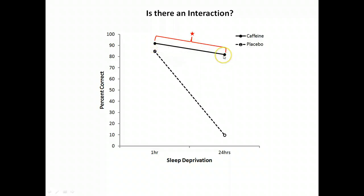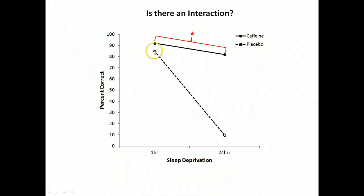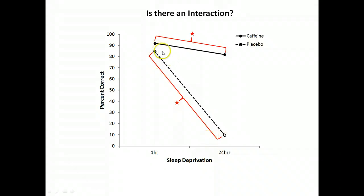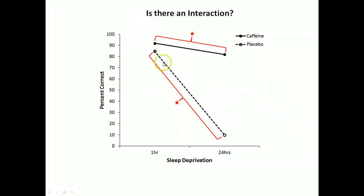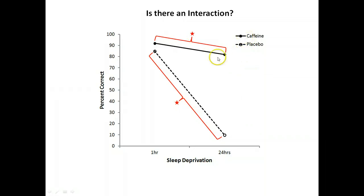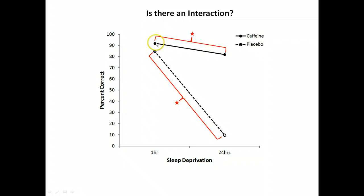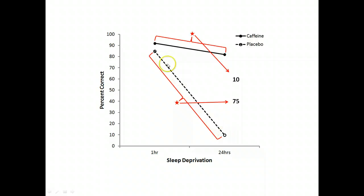The difference for the caffeine group between performance at one hour and 24 hours is about 10%. What we want to examine is whether this difference is different from the difference in the other level of supplement. Overall, performance is worse at 24 hours than at one hour — which makes sense, since 24 hours of sleep deprivation will impair attention and memory. But we're examining whether caffeine alleviates this difference. The difference for the placebo group is about 75%, so the interaction is asking whether this difference of 10 is significantly different from this difference of 75.